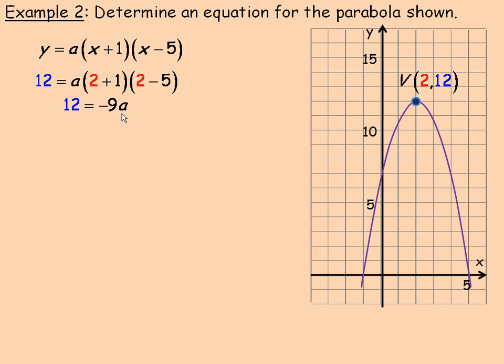Dividing both sides by negative 9, we get a is 12 divided by negative 9, or negative 12 ninths. And we can divide both of those by 3, and so a simplifies to negative 4 thirds.